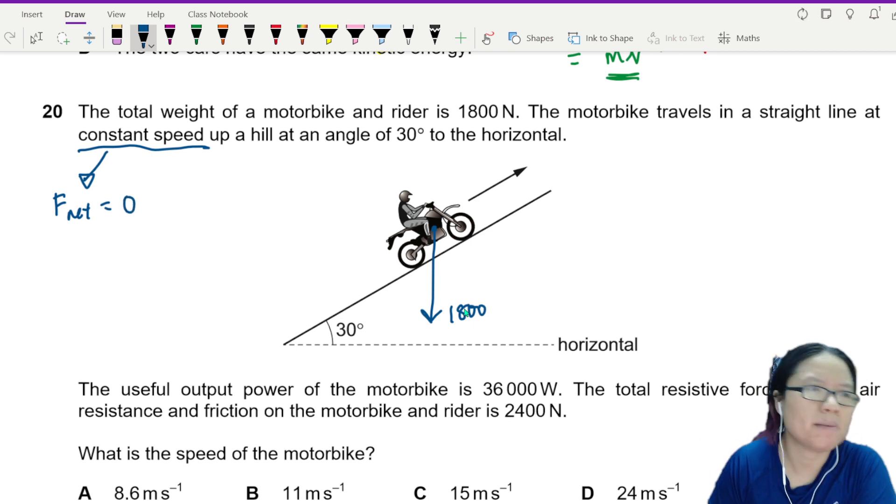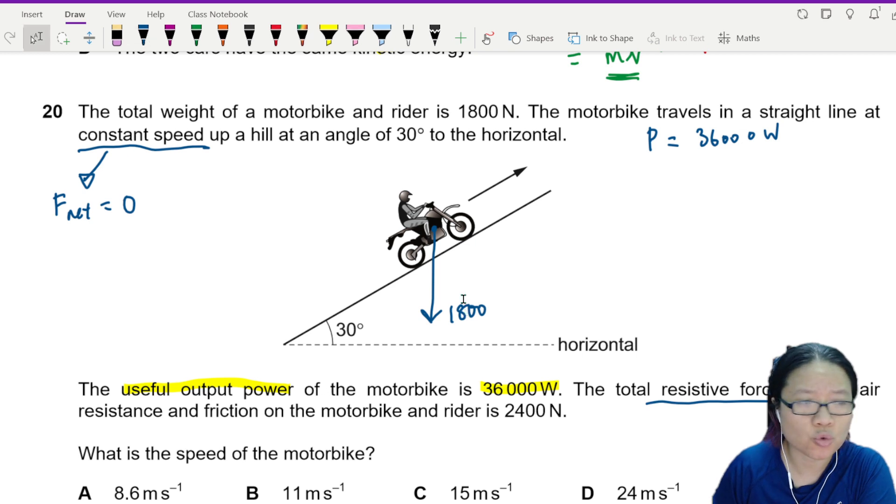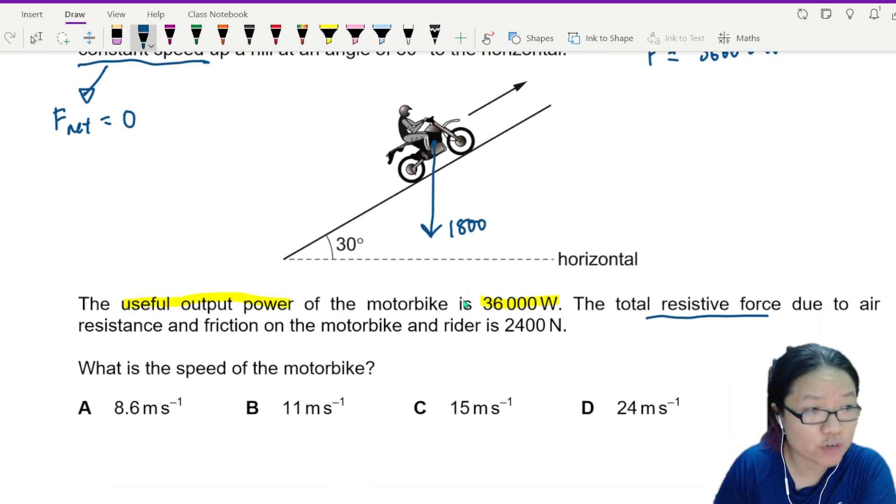Up a hill at an angle of 30 degrees to the horizontal. The useful output power of the motorbike is 36000W. So power is equal to 3600. The total resistive forces due to air resistance and friction is 2400 newton.